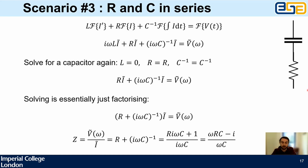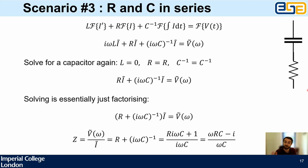The impedance of a series resistor and capacitor has a real component and a complex component, and is a function of ω. Time has disappeared through the Fourier integration process — it's just a function of frequency and of your circuit component coefficients. This is a key point: Z is parameterized in terms of frequency, not time.